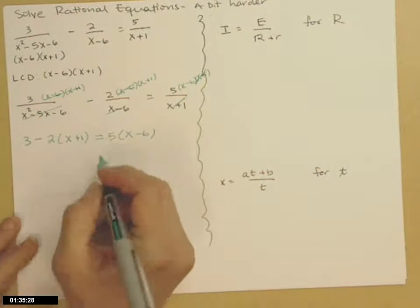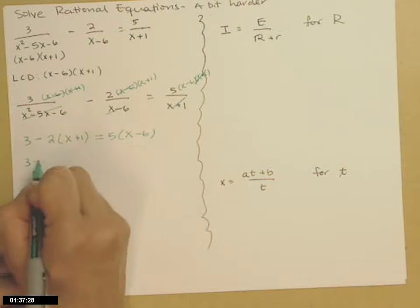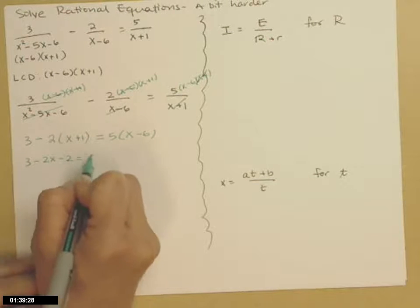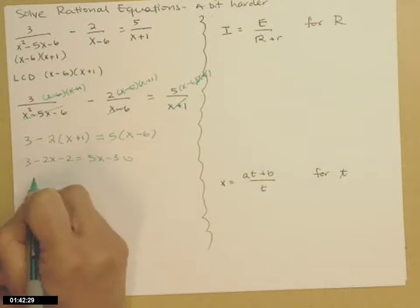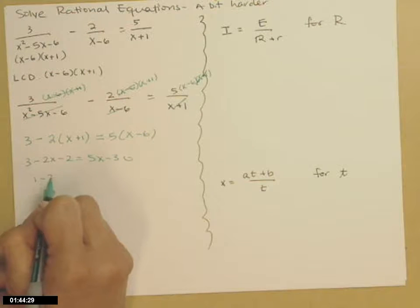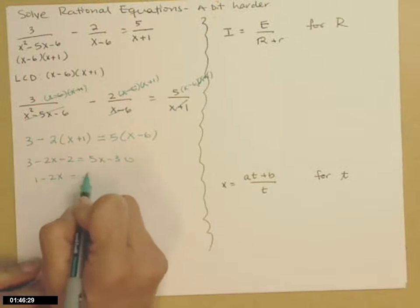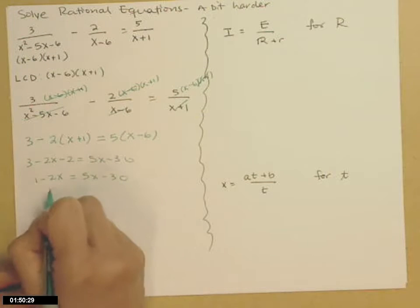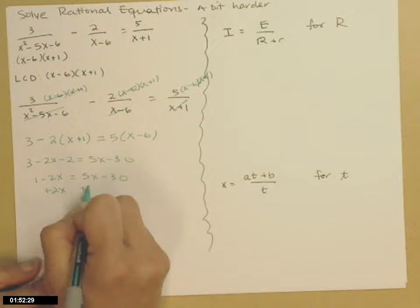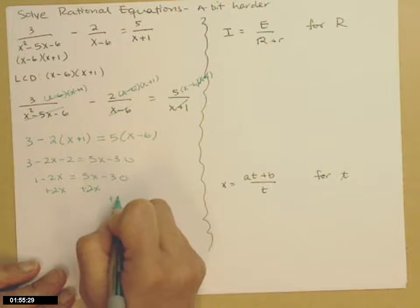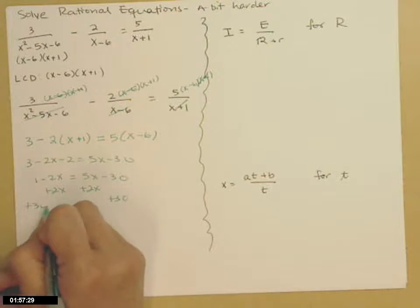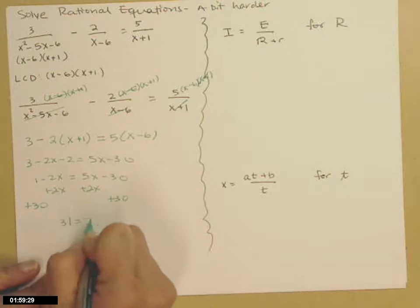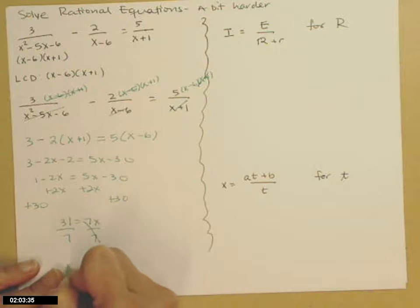Distribute your 2 and your 5 to clear parentheses. Tidy up on the left. Gather all your x's together on one side. All your numbers on the other side. And divide by your coefficient to get your answer.